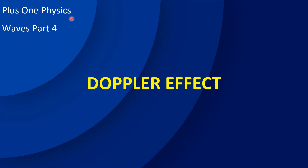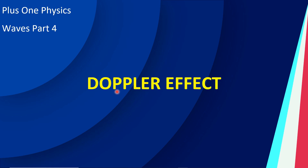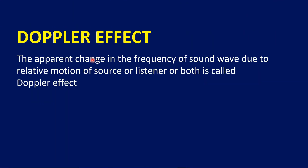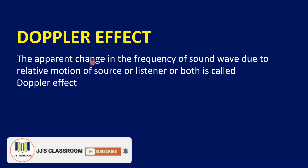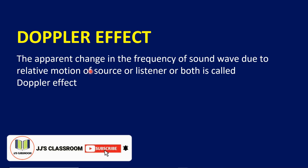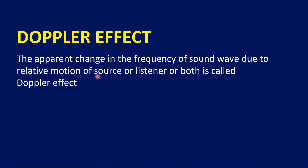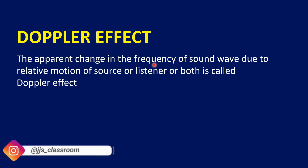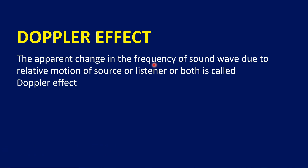We are going to discuss the Doppler effect. The Doppler effect is the apparent change in the frequency of sound due to relative motion of source or listener or both. The apparent change in sound frequency due to relative motion between source and listener — that phenomenon is called the Doppler effect.